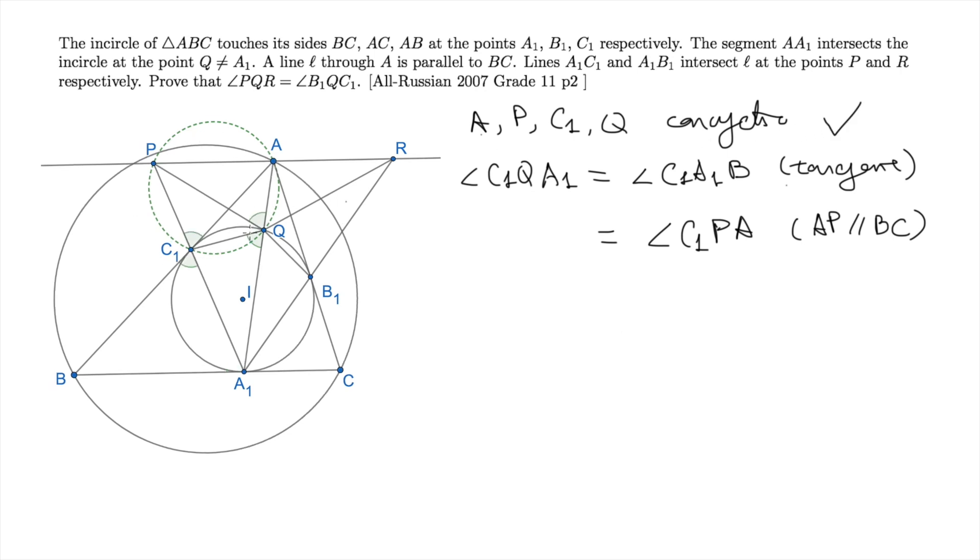Next, we are going to use this concyclic property to perform angle tracing. Indeed, it tells us that the angle PQA equals to the angle PC1A, which is the same as the angle A1C1B. Now since the incircle is tangent to AB as well, applying a second-time tangent chord theorem tells us that the angle A1C1B equals to the angle A1QC1. So finally, we have these two green angles are equal to each other.